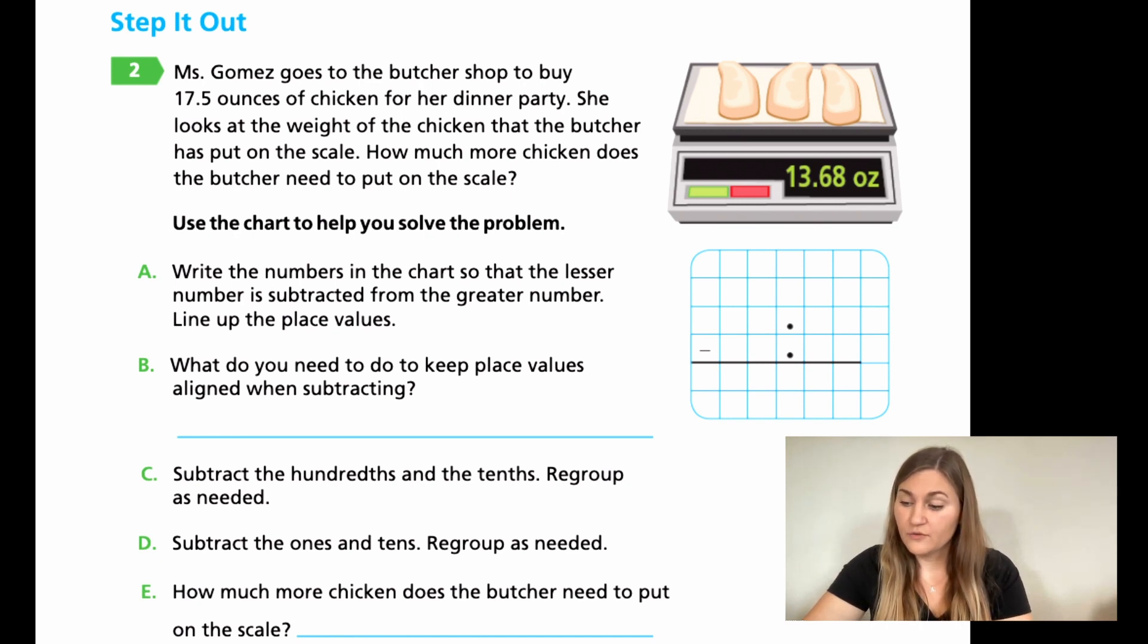So for A, write the number in the chart so that the lesser number is being subtracted from the greater number. Line up the place values. Put the bigger number on top. Remember, don't count the digits as the bigger number. 17.5 versus 13.68. Pay attention to the 17 and the 13, not what comes after.